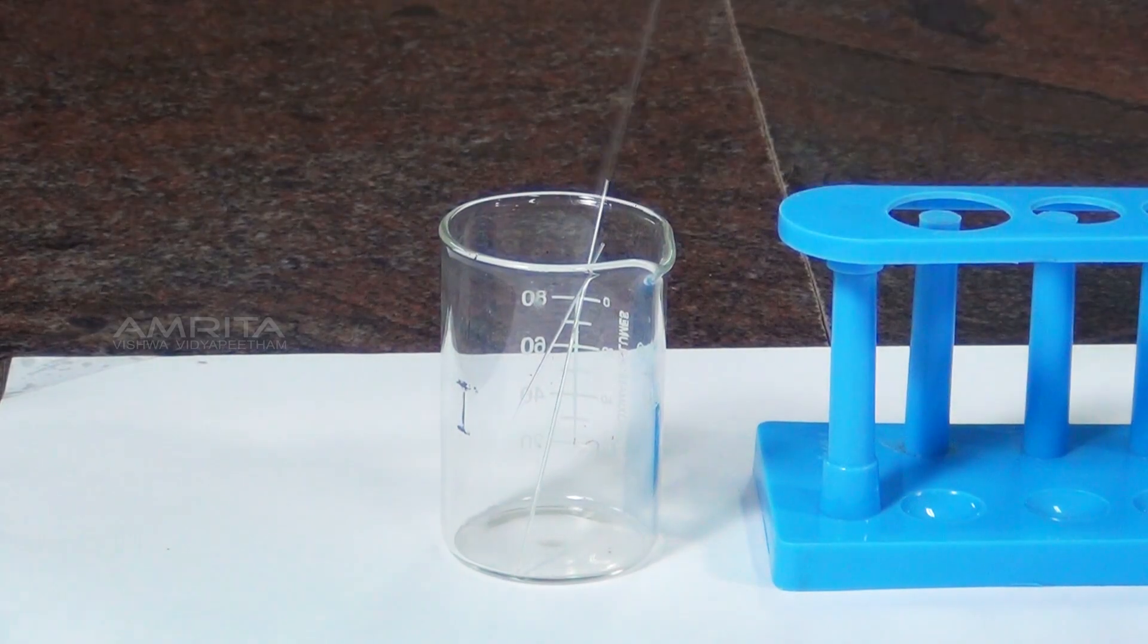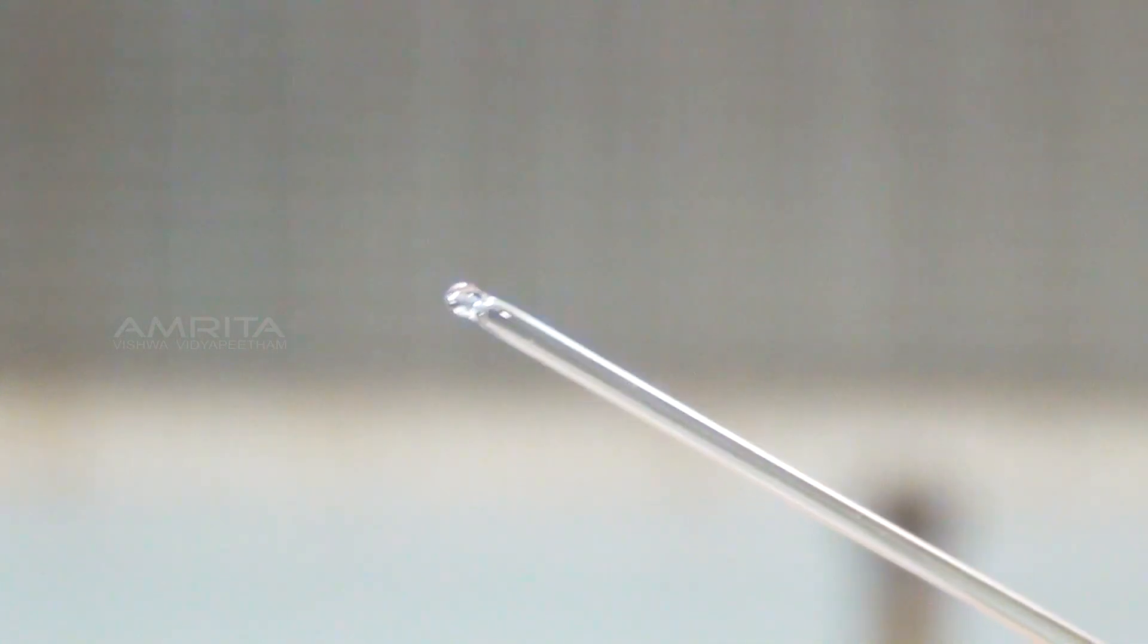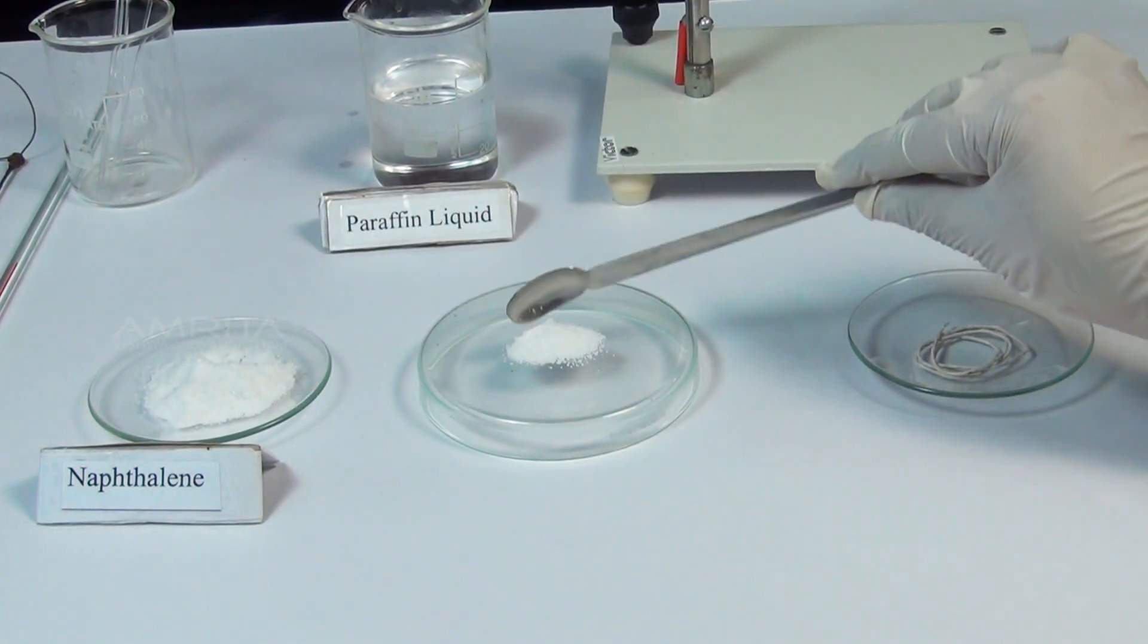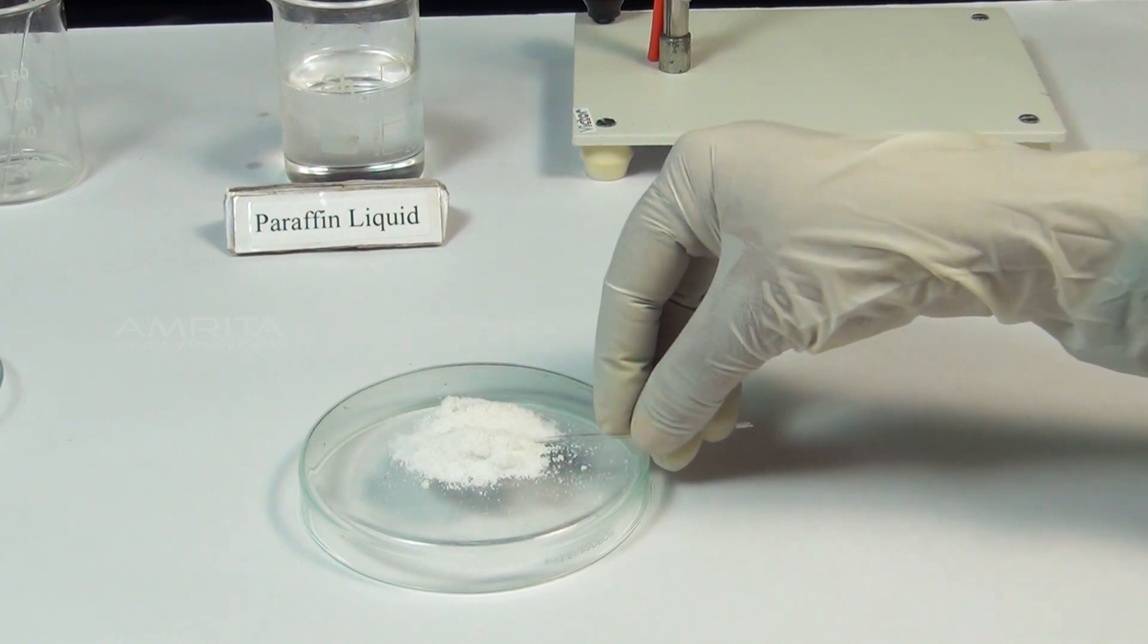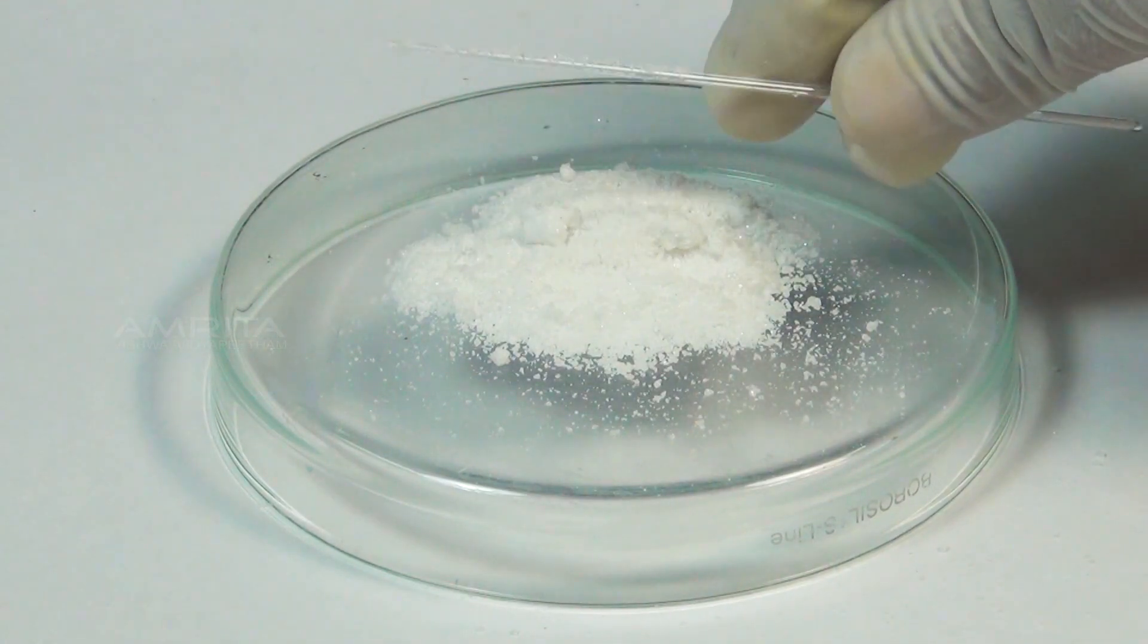Procedure: Take a capillary tube and seal one end by heating it in the flame of the Bunsen burner. Now, using the spatula, make a heap of the powdered naphthalene on the glass plate. Push the open end of the capillary tube into the heap. Some substance will enter into the capillary tube.